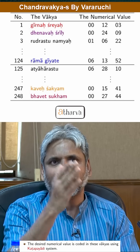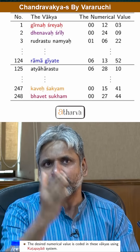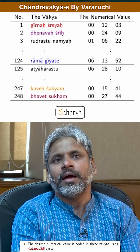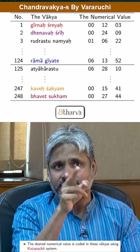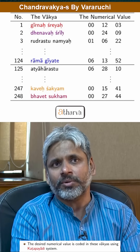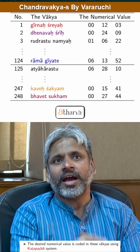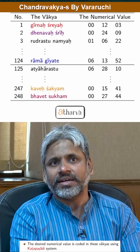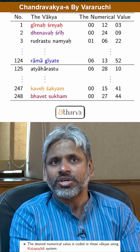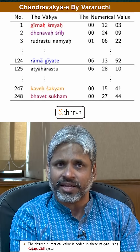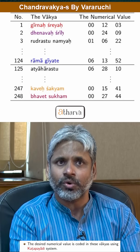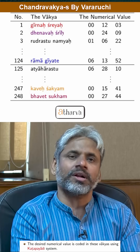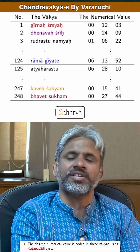Now, how do we understand that the number corresponding to 'Girna Shreyaha' is 1203? Since this is expressed using the Katapayadi system of numeration: 'gi' (ga) is 3, 'na' is 0, then 'ra' is 2, and 'ya' is 1. If we reverse the order, we get 1203.